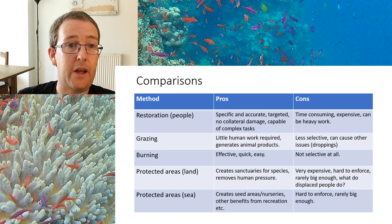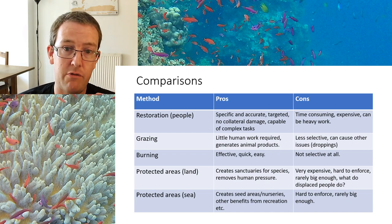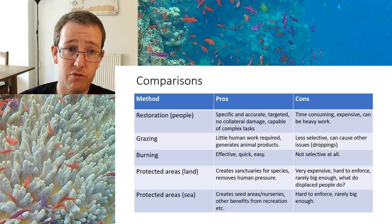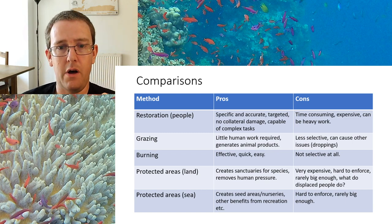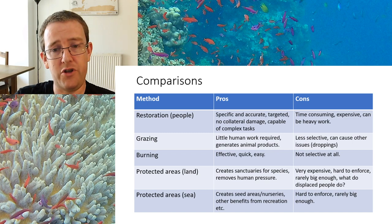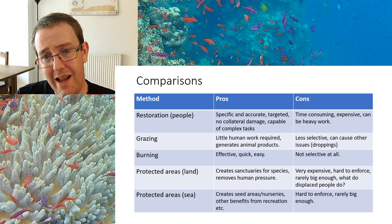Burning, as used in the New Forest, is effective at encouraging new growth — it's quick and easy. Some ecosystems actually require it: Australian environments have species that require fire as part of their life cycle. But it's not selective at all, and if climate change causes fires to get out of control, it becomes a massive problem.